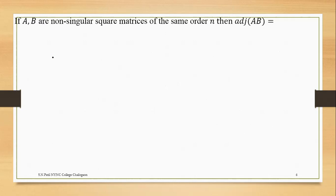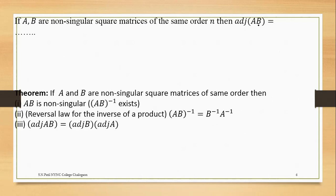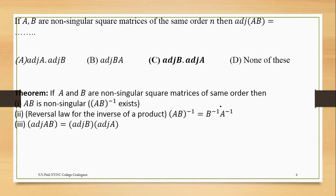Now if A and B are non-singular matrices of the same order, then adjoint of AB equals adjoint of B into adjoint of A. We have this theorem. Also, their product is non-singular, and by the reversal law for the inverse of a product, AB inverse equals B inverse into A inverse. So the answer is adjoint of B into adjoint of A.